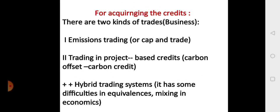For acquiring the credits, there are two kinds of trades: selling and buying. First, emission trading, i.e. to put a cap and then trade. Second, trading in project-based credits, i.e. carbon offset, or performing a project for carbon credit in a developing country. There is also a hybrid trading system that has some difficulties in equivalences and mixing in the economics.